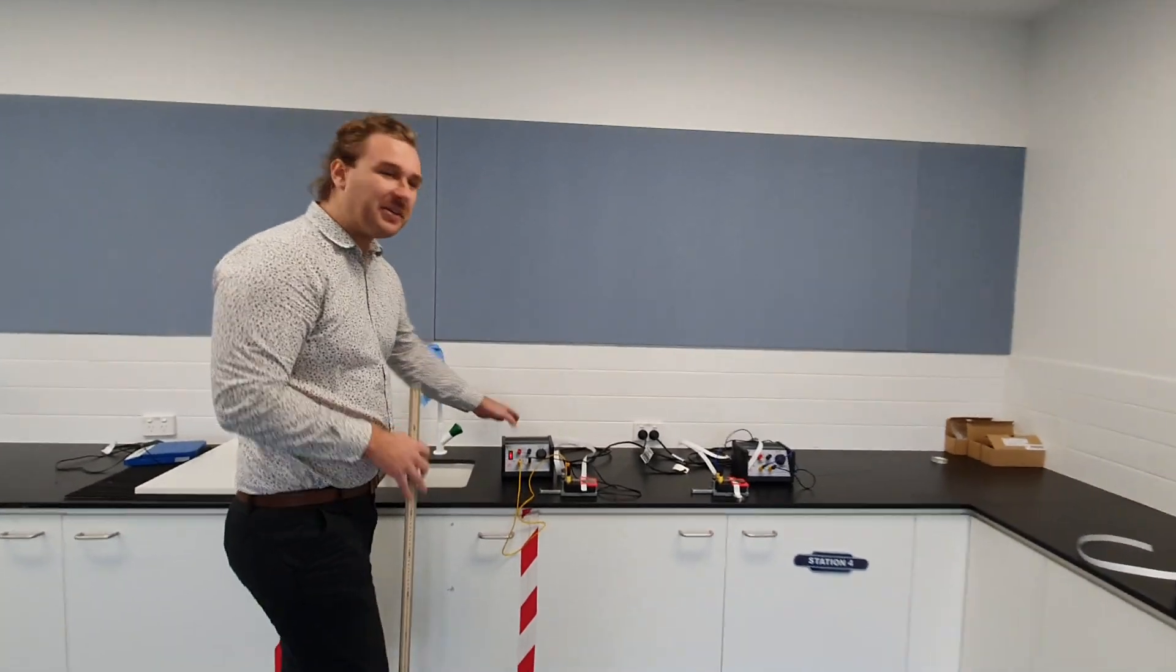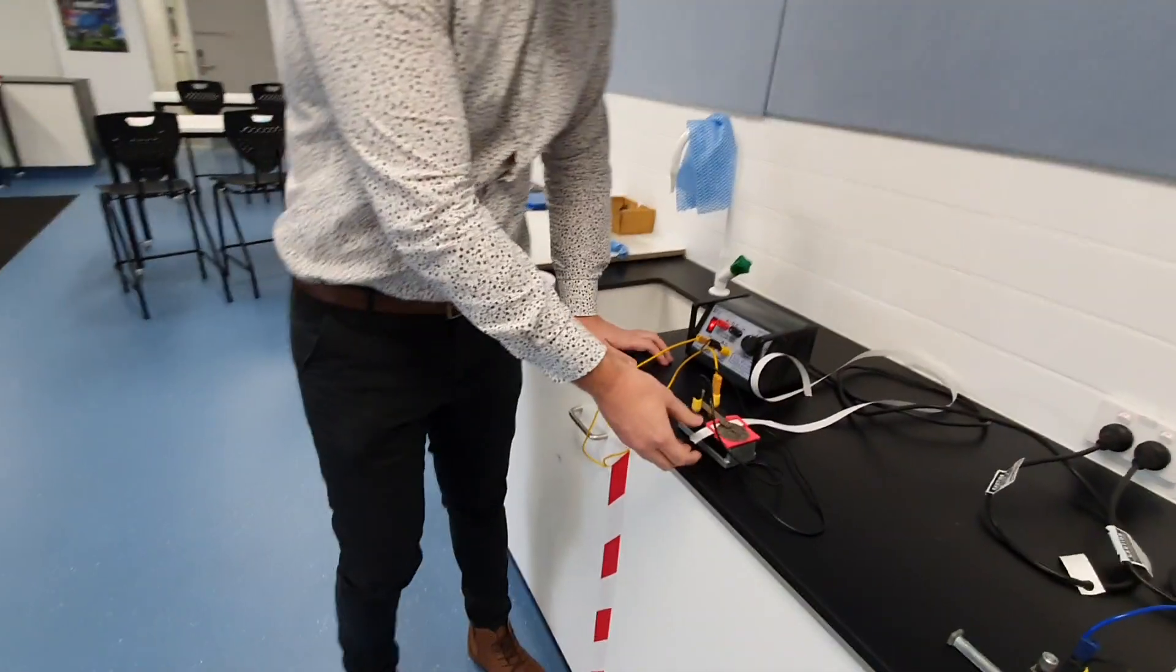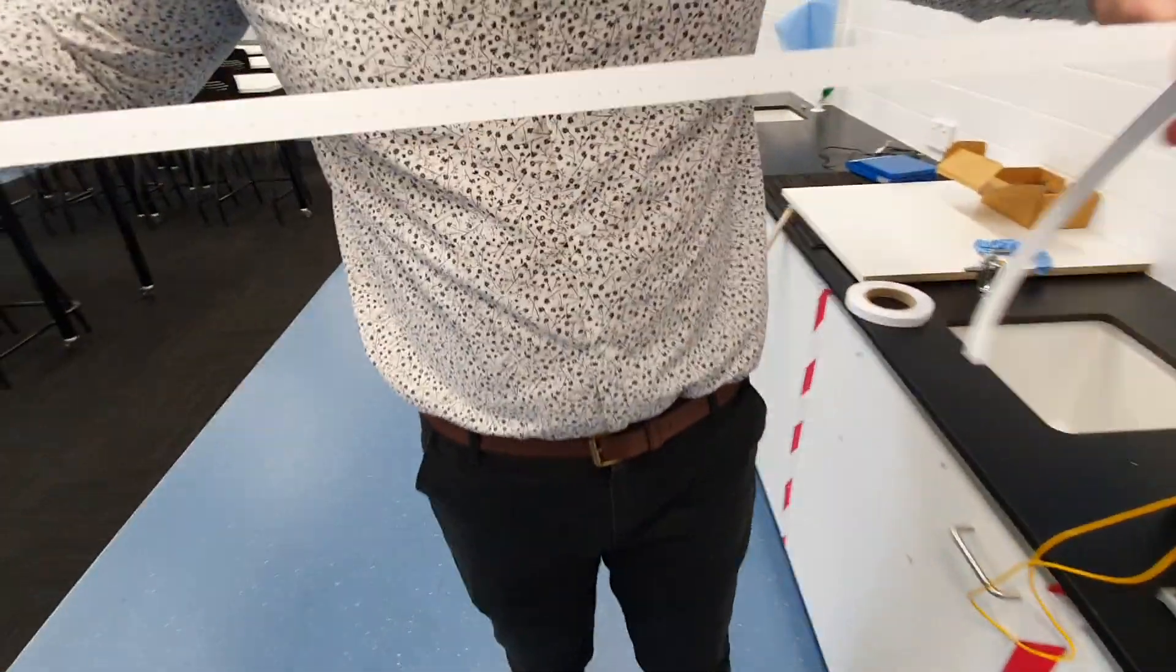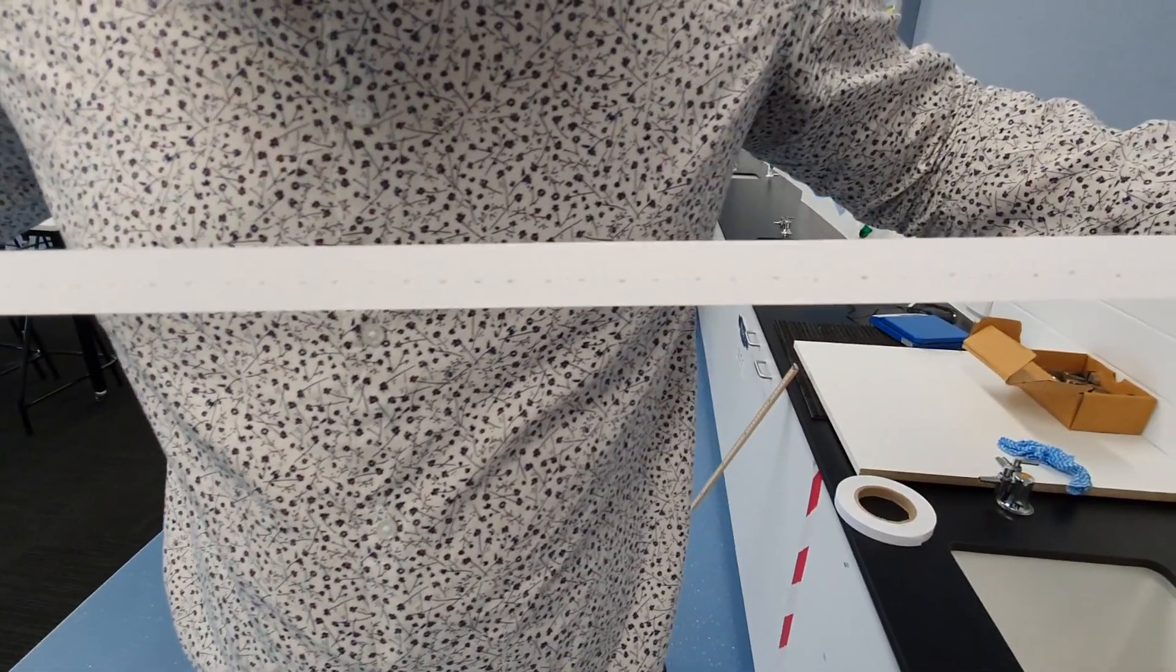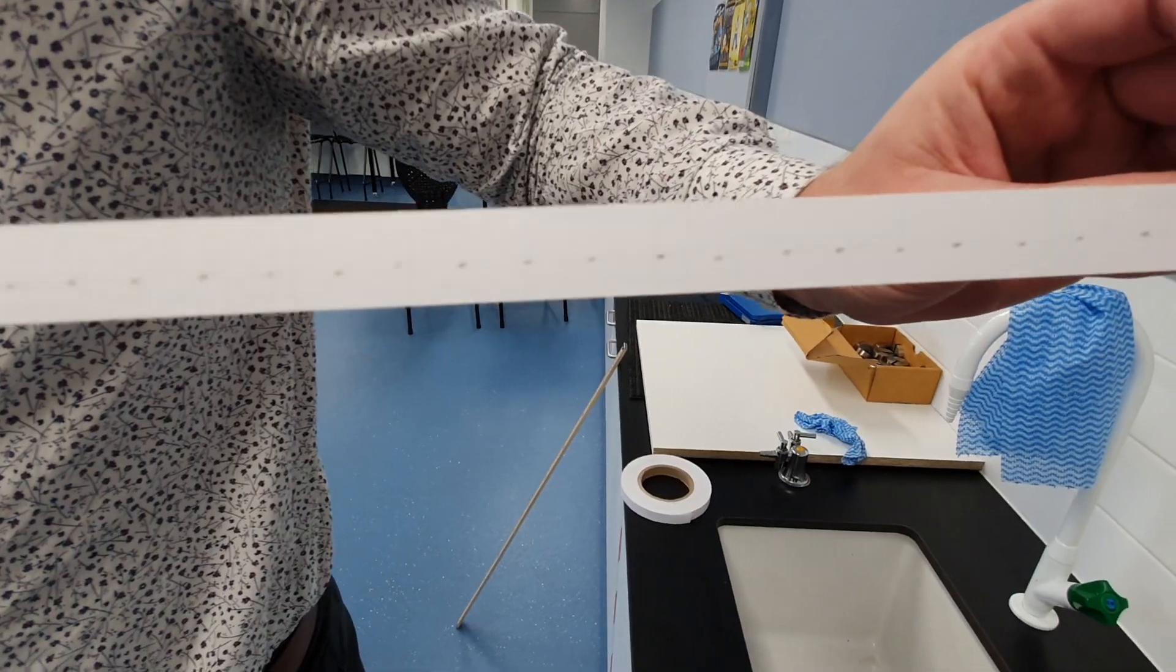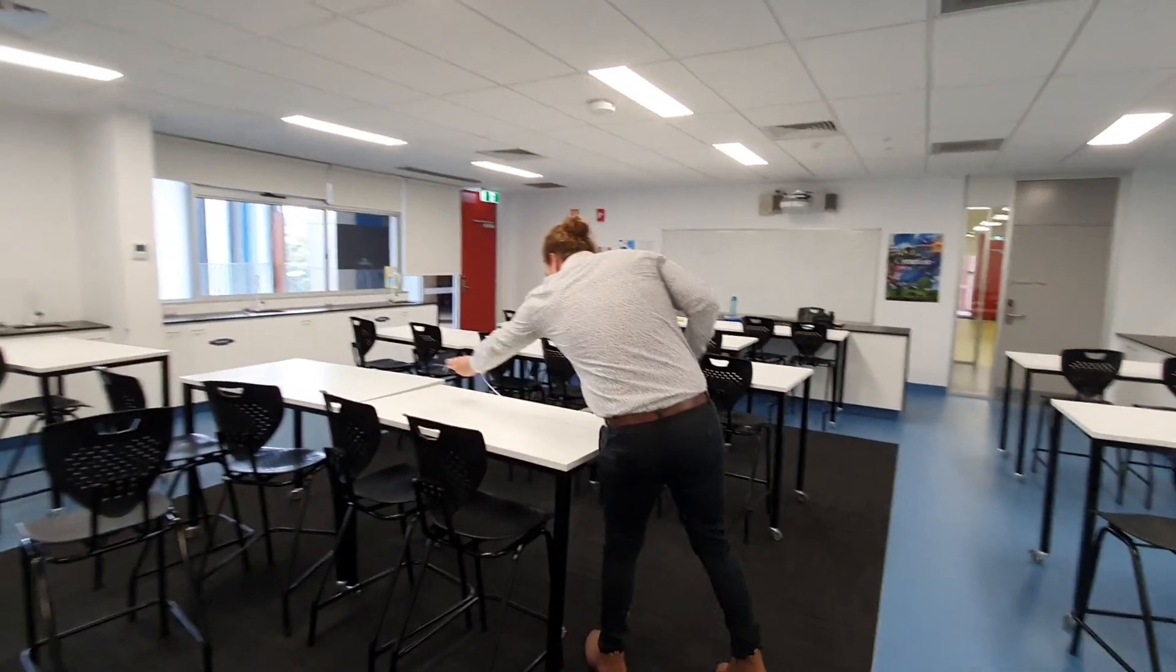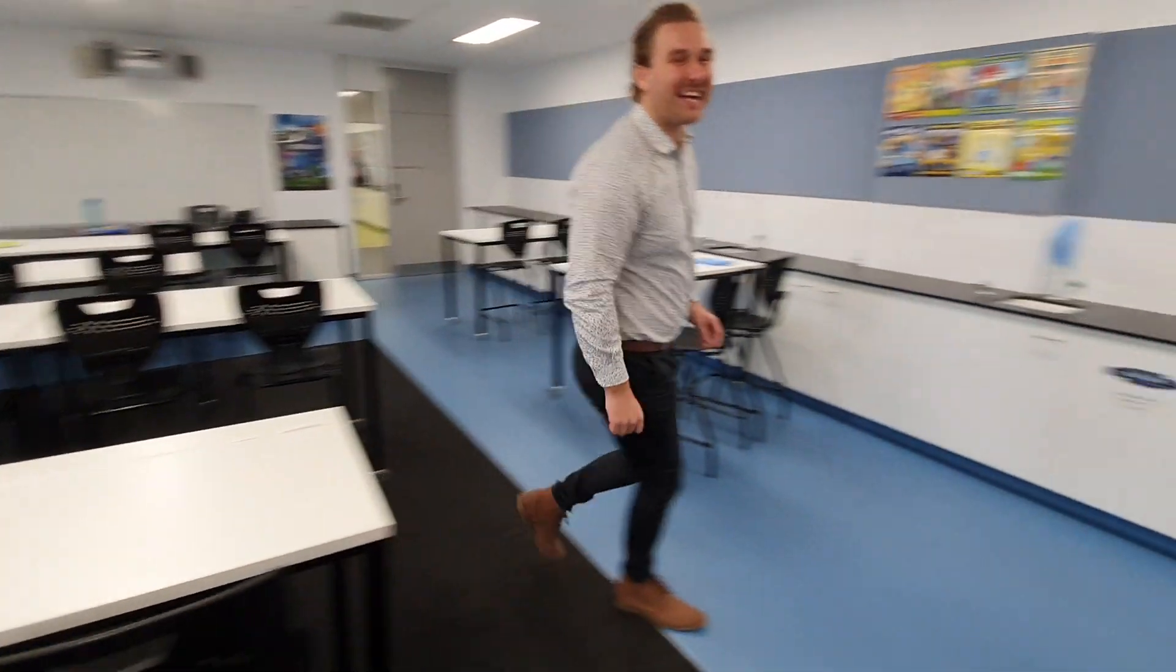So without further ado... Alright, we can see here what the ticker tape and ticker timer does. We get these dots spaced out on the ticker tape. Brilliant. I'm just going to leave this over here for later use. It's like one of those cooking shows - we'll come back to that later.